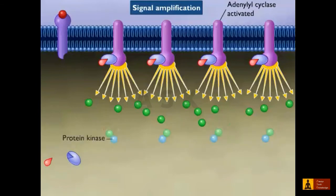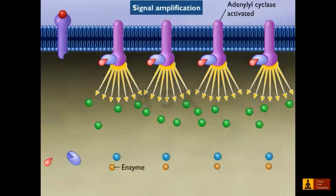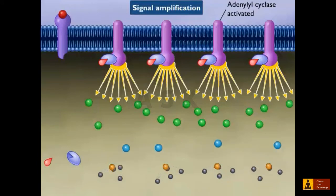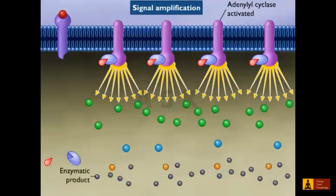The protein kinases then activate several molecules of a specific enzyme. The end result is rapid production of high levels of the final product.